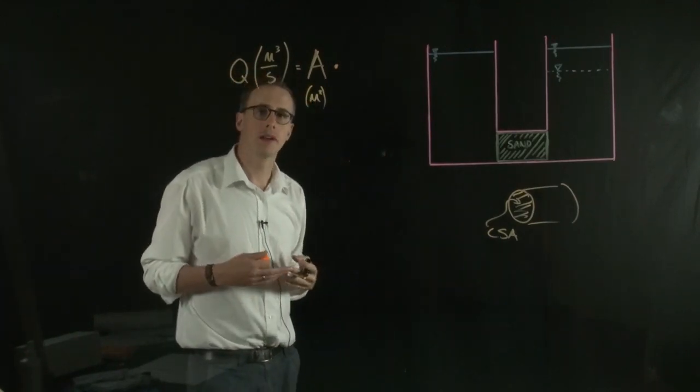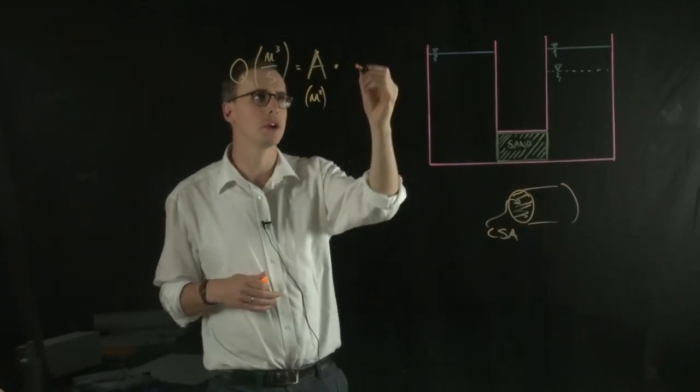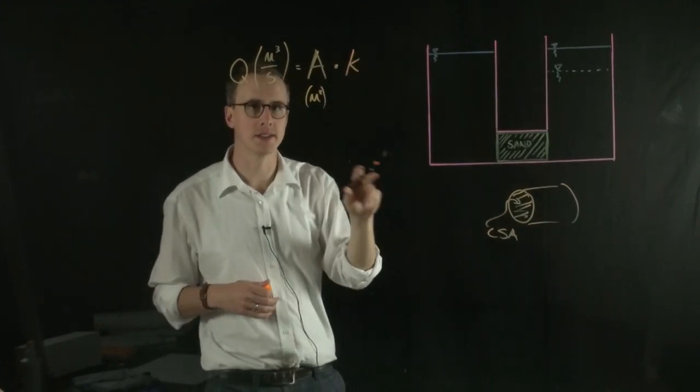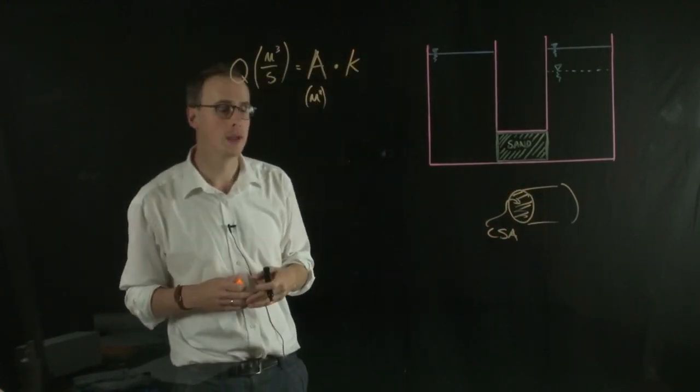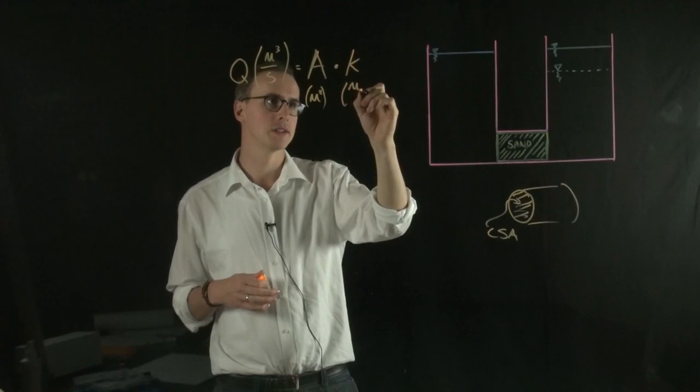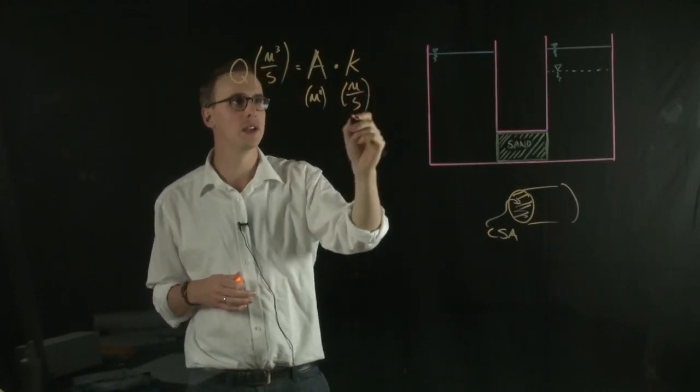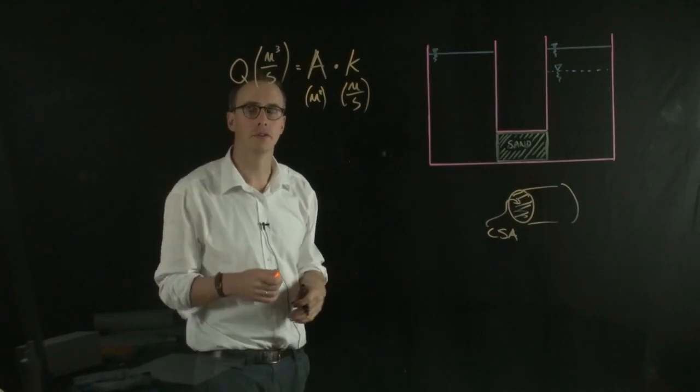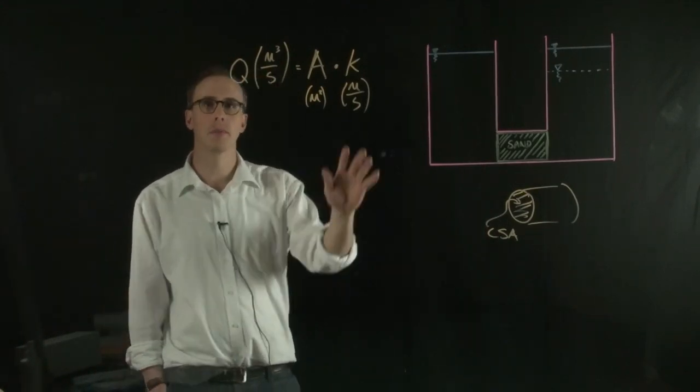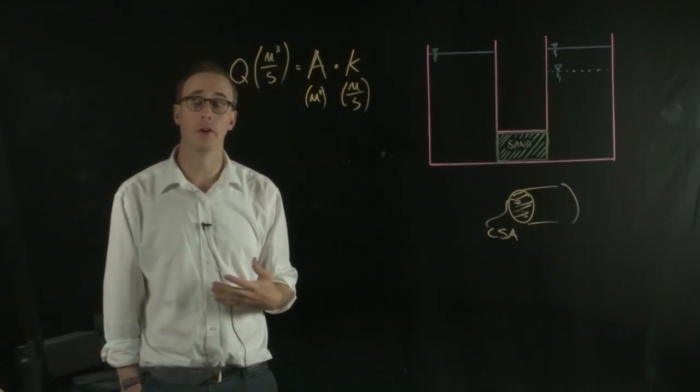And then we multiply that by the permeability. So what the permeability says is how susceptible this material is for water flow through it. And that has given the units of meters per second. So we can see if we multiply these two units together, we'll get our units of flow. So when we talk about permeability, we often talk about it on a log scale.